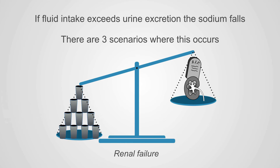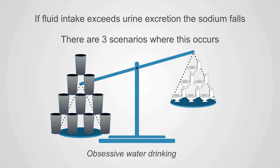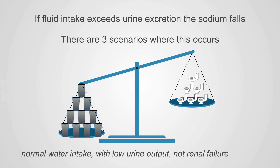This can occur in three different scenarios. One, renal failure — no urine output means you're always going to have more intake than excretion. Two, obsessive water drinking, just drinking so much that even healthy kidneys can't keep up. And lastly, normal water intake with low urine output but not renal failure.